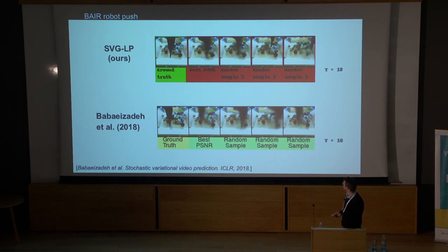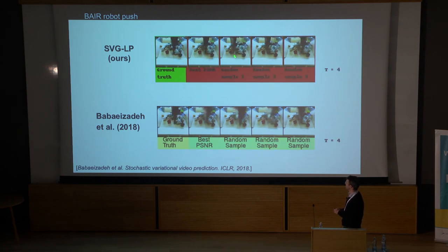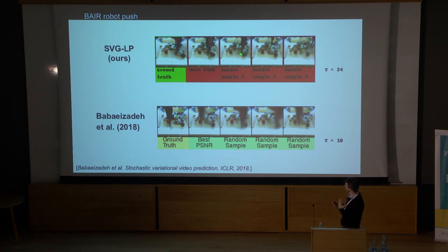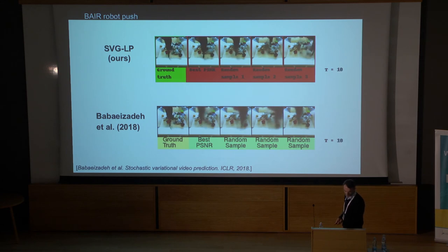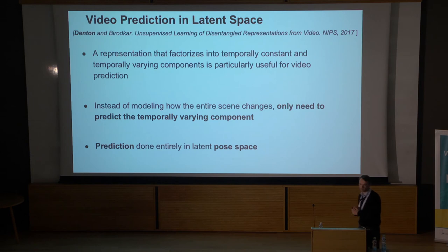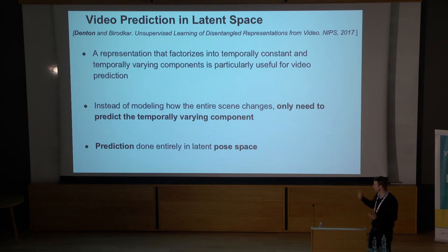One thing we've been thinking about is using some kind of attention mechanism to force the model to focus on smaller parts of the image where things are actually changing. That's something we're currently working on. The other piece of work I wanted to briefly discuss is how to do prediction not just in pixel space, but in some high-level latent space, which is perhaps easier to work with.